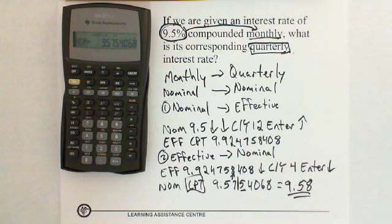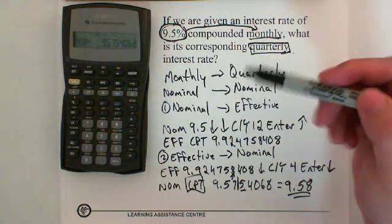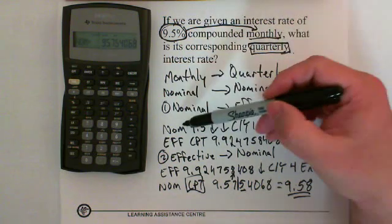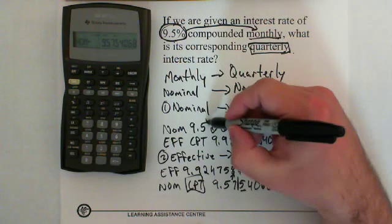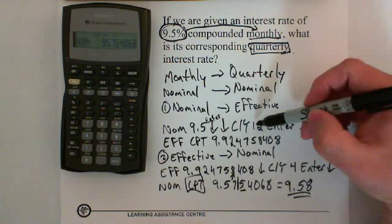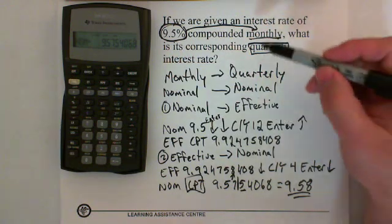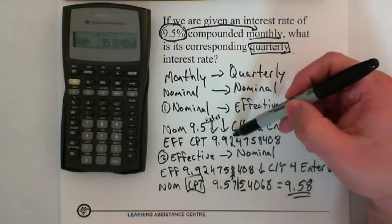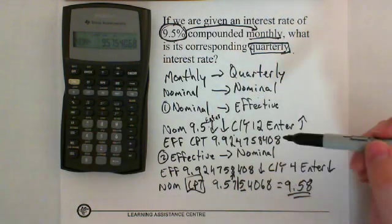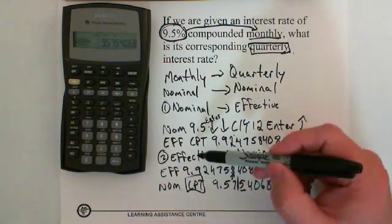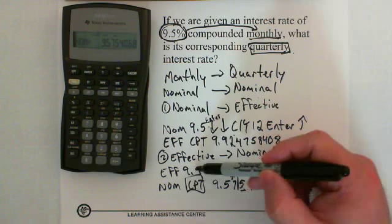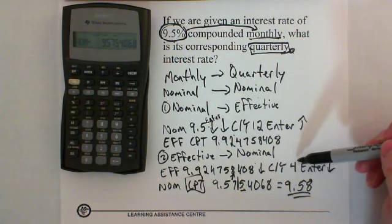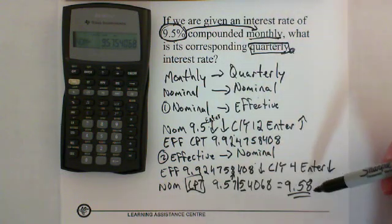To quickly review changing from one nominal to a second nominal: step one is change from nominal to effective. We were given 9.5% monthly, so NOM is 9.5, Enter, down arrow twice to CY, type in 12 because the 9.5 is monthly, scroll up to EFF and push Compute — giving us the effective rate for 9.5 monthly. Step two: change effective back to nominal. Leave EFF as calculated, go down to CY, change it to 4 for quarterly, scroll down to NOM and push CPT. We get 9.58.